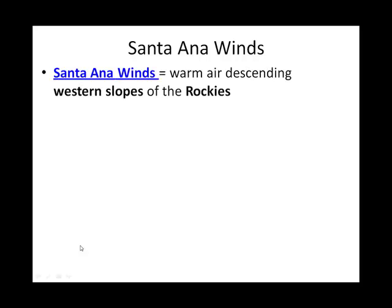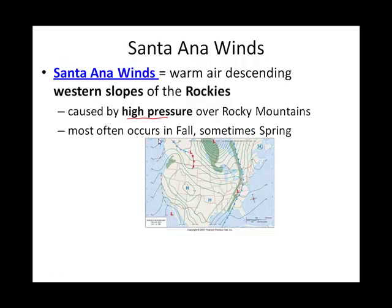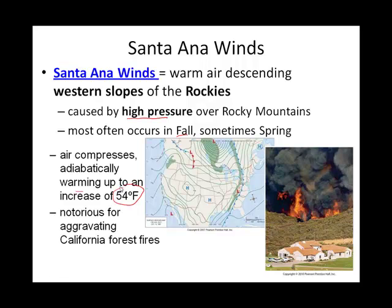Santa Ana winds are of notoriety — they're famous for aggravating forest fires. Santa Ana winds are on the western slopes, the windward side of the Rockies, and are caused by a high pressure system over the Rockies. They occur most notably in the fall, sometimes in the spring. As the air goes down the slopes, it gets squeezed and warms, making it another warm downslope wind. The timing — when conditions are already dry in the fall — is what makes Santa Ana winds able to aggravate forest fires.